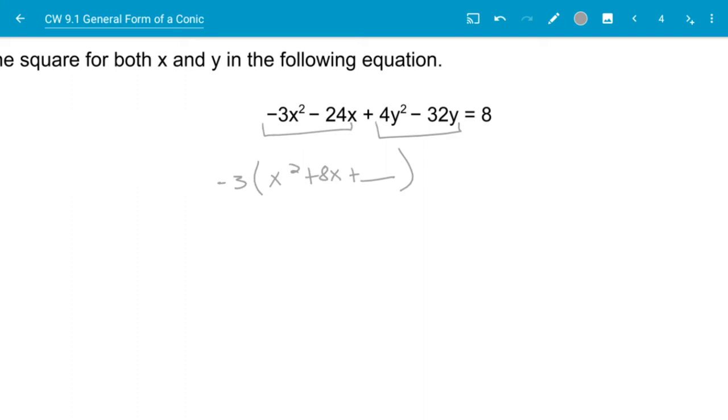And then on my y squared portion, I have to set it to a coefficient of 1. So I'm going to factor out a 4 out of it. So I'll factor out a 4. That will give me y squared. And negative 32 divided by 4 is negative 8. And then I'll go ahead and add what I'm going to add in there. Again, whatever I add in here to complete this square, I'm going to multiply it by 4. And that's what gets added on both sides.